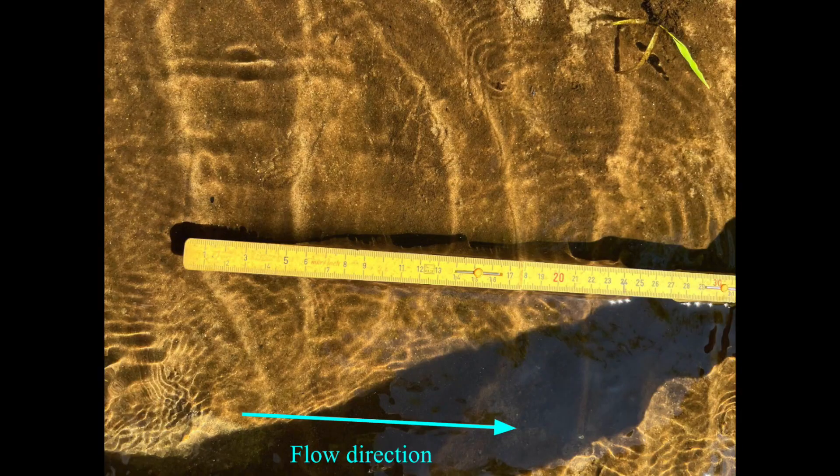Let's take a look at some of these bedforms. Here are some ripples. Notice how they are asymmetrical — they have a long stoss side and a steep lee side. They form as the water flows over the sand, transporting the grains in the downstream direction, and so the long stoss surface of the ripples points in the direction of the current.